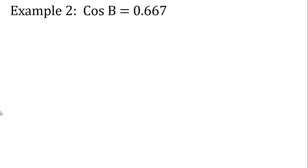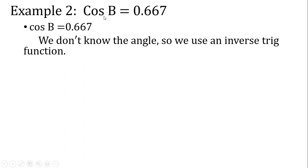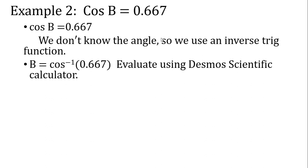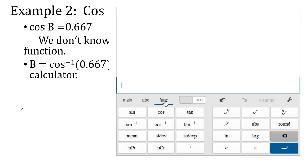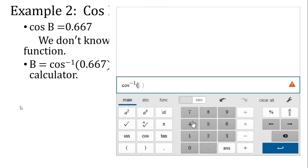Let's try another example using cosine. Cosine B equals 0.667. Again, we're going to use the inverse trig function of cosine. Rewriting the equation, we get angle B equals cosine inverse of 0.667. Using our decimal scientific calculator, we go ahead and plug that in. Our solution for angle B is 48 degrees.